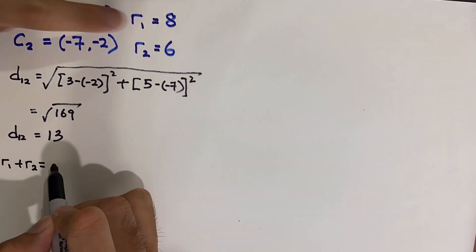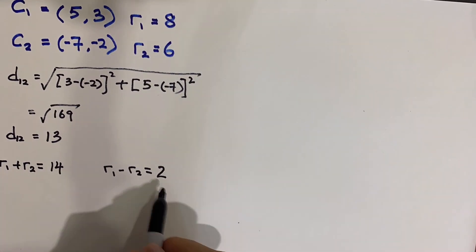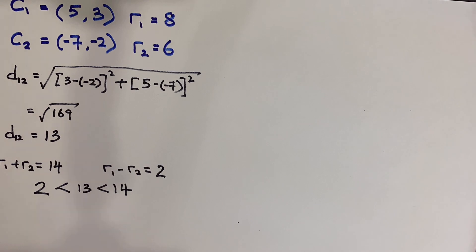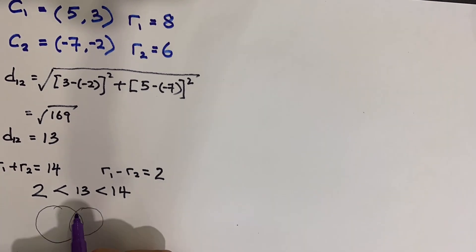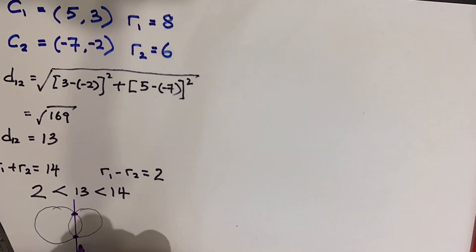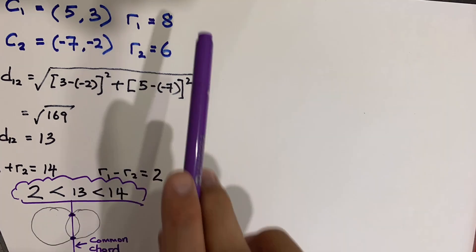Next thing, I will find out the sum of the two radii. It's 14. It's not the same as the distance. So I find out the difference between the radii. And I find out that the distance is in between the sum of radii and the difference of radii. So that tells me that we have a common chord.